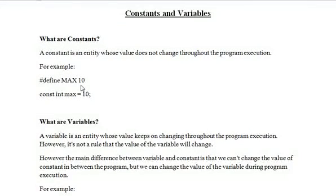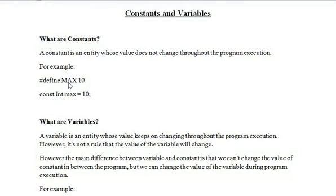There are two ways in C through which we can define a constant. The first is using the preprocessor directive: hash define, then a space, then the name you choose for the constant. It is said that you should write it in capital letters — block letters. It is not compulsory, you can use small letters, but it is a common convention all programmers follow. It is not mandatory, but it is good practice to use block letters for defining the constant.